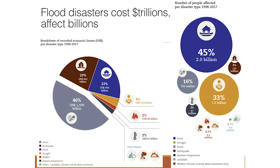Floods happen a lot and they also cost a lot — in the trillions of dollars over this 20-year period. Floods represent 23% of disaster costs, about $656 billion. But there's also the gray portion — these big tropical storms and hurricanes — which can also cause a lot of flooding. Add it all together and the economic impacts from floods are huge.